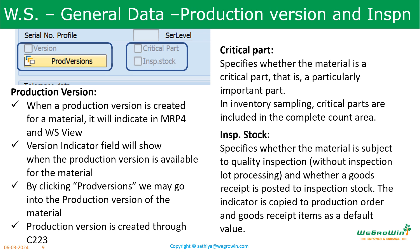Then we have the production version details. The production version details are available in MRP4 view also, and are maintained in the production scheduling view as well. By clicking the production version tab, we can go into the production version of the material. Production version is created through transaction C223. There is another field called critical part — this specifies that the material is critical or very important. In inventory sampling, critical parts are included in complete count data; otherwise it is only an information field.